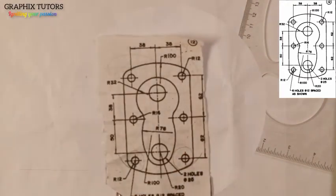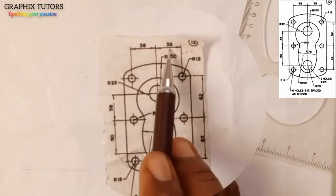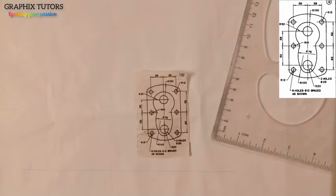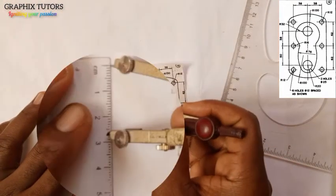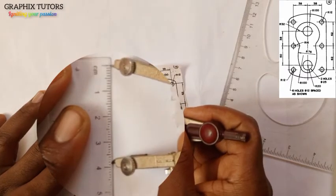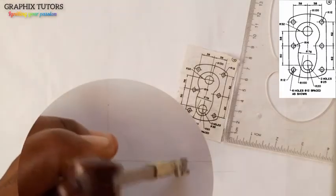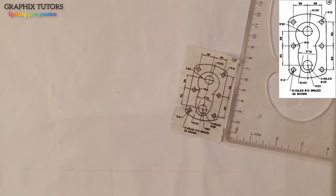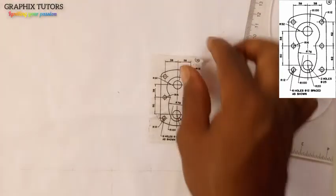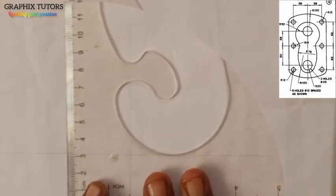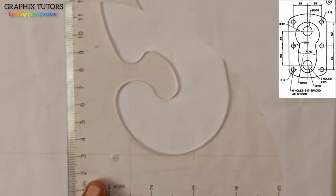We'll start from here. To the left of this circle is 38mm and to the right is also 38mm. So I'll take my metal rule and compass and measure 38. I'll place it here and mark 38 to the left and 38 to the right. Now I'm going to take those points up with my set square.